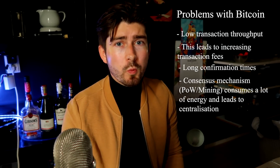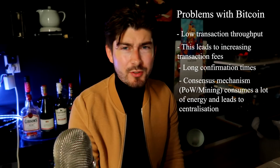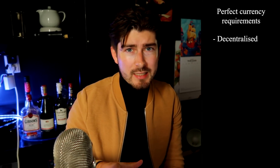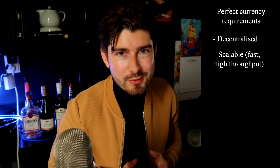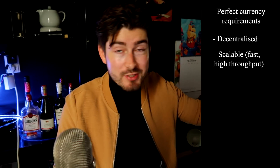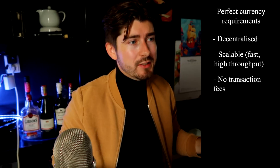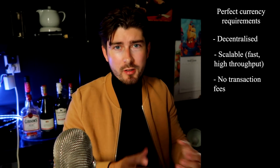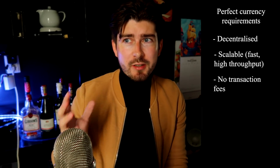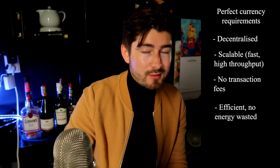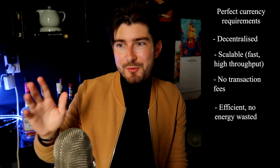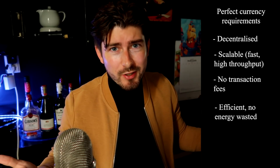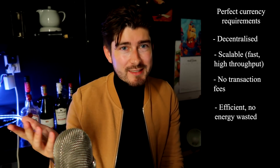Mining is an energy-intensive process that is not very efficient, and the rewards associated with mining lead to centralization over time. This makes how Bitcoin currently works unusable as a global digital payment network. So now let's look at the perfect currency. What are the most important factors to consider? First, decentralization. Next, scalability — it needs to be fast, because we want to buy coffee without waiting 30 minutes for a transaction to go through. We also don't want any transaction fees. It needs to handle a lot of transactions per second. Furthermore, we want a very efficient network with no resources wasted on mining, especially with global warming. And we want the network to decentralize over time, not centralize.